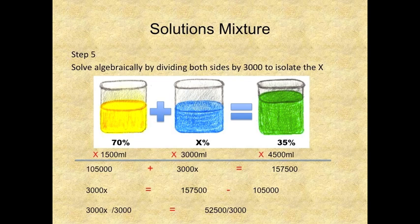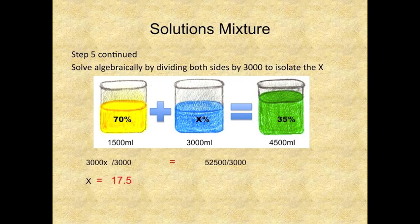Step 5. Solve algebraically by dividing both sides by 3,000 to isolate the x. From the previous slide we had 3,000x is equal to 157,500 minus 105,000. This is going to take us to the next step which is to isolate the x and to do that you need to divide both sides by 3,000. So 3,000x divided by 3,000 is equal to 52,500 divided by 3,000. Step 5 continued. So we are solving algebraically by dividing both sides by 3,000 to isolate the x. So 3,000x divided by 3,000 is equal to x and 52,500 divided by 3,000 is equal to 17.5.